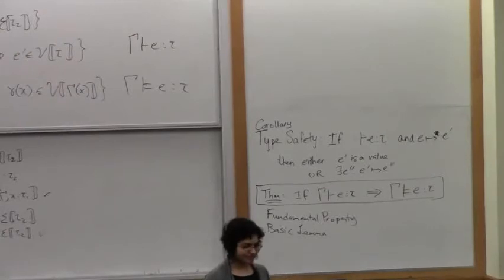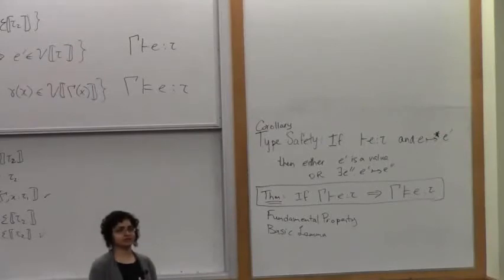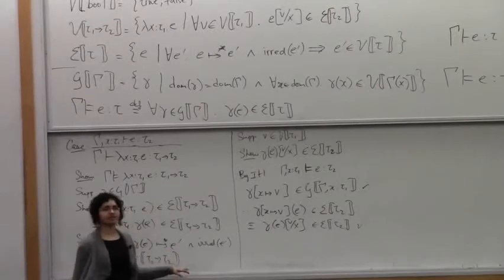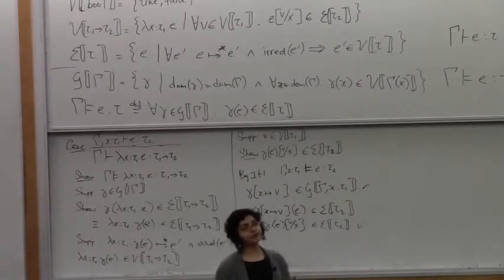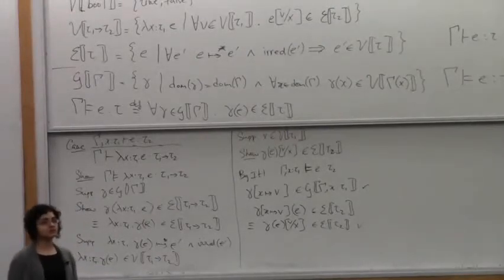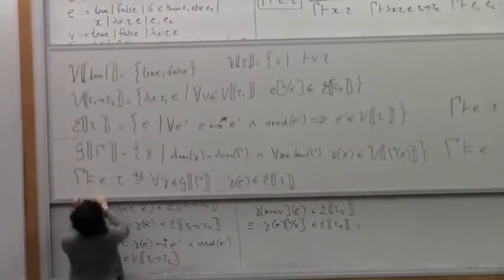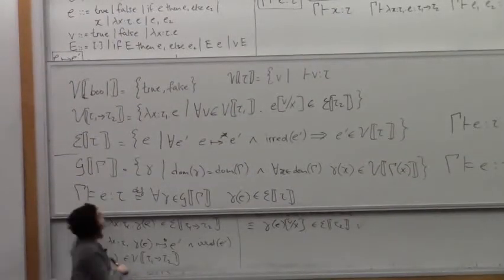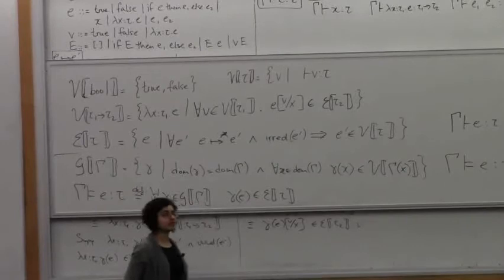Application is just longer, not harder, because you have two subterms, E1 and E2, and they're both going to need to get reduced to values. Ultimately you're trying to show that E1 applied to E2 belongs to the E relation, which says the application gets all the way to some value, so you have to look at a bunch of sub-expressions and apply the induction hypothesis twice.